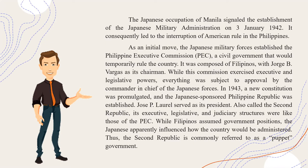Thus, the Second Republic is commonly referred to as a puppet government. Soon after the return of General Douglas MacArthur to the Philippines in 1944 and the eventual defeat of the Japanese forces, the Commonwealth government was re-established. The 1935 constitution again became the highest law of the land. Manila suffered as the second most devastated city after World War II, next to Warsaw in Poland. By July 5, 1945, MacArthur announced the liberation of the Philippines. The reestablishment of the government under Osmeña saw enormous problems: devastation by war, destruction of the economy, political warfare, and guerrilla violence. Thus, the primary problem during this period was the reconstruction of the country and the government.